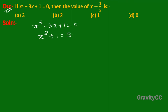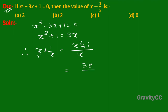Therefore, x + 1/x = (x² + 1)/x = 3x/x. The x's cancel, giving us 3. So option A is the correct answer.